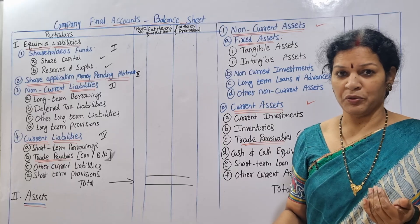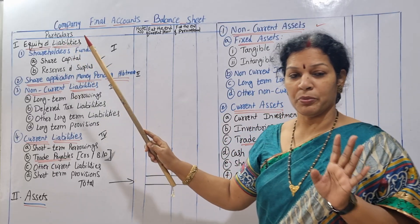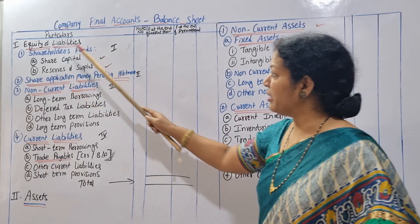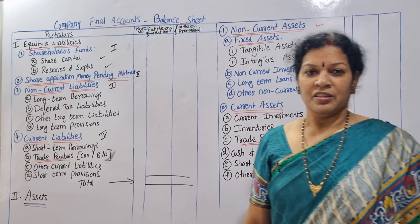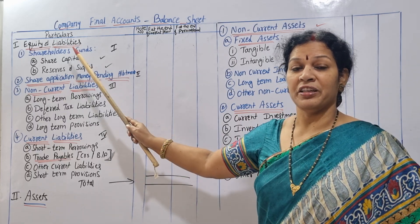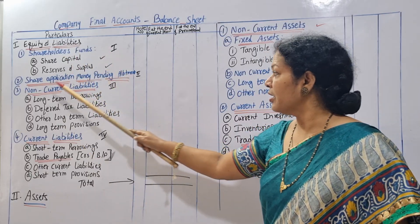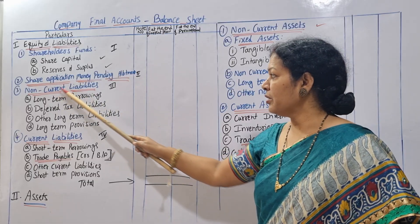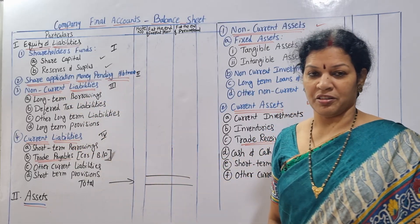First, we focus on liabilities. We have four parts. The heading is equity and liabilities. One is shareholders funds. Two is the share application money pending allotment. Three is the non-current liabilities, and four is the current liabilities.